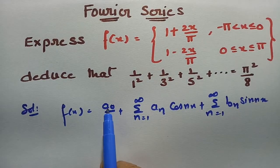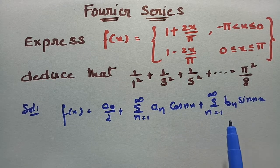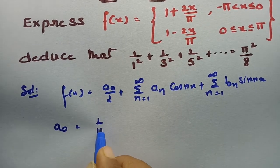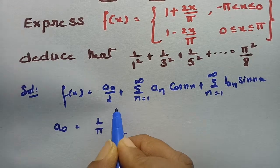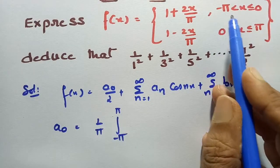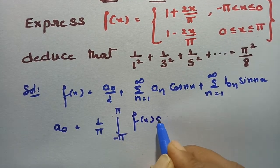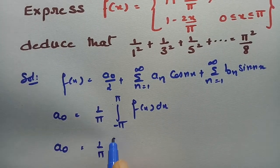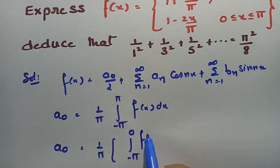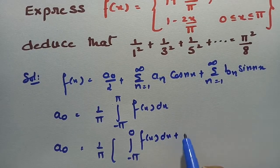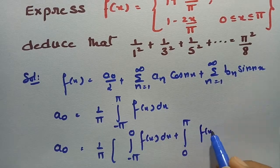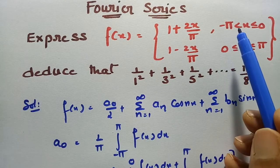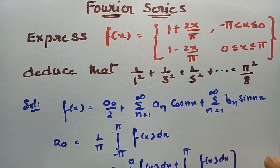We have to calculate the values of a₀, aₙ, and bₙ and substitute in this formula. For a₀, the formula is a₀ = (1/π) × ∫ from −π to +π f(x) dx. We split this integral: from −π to 0 and from 0 to π.